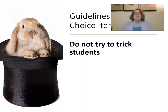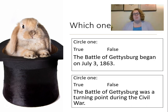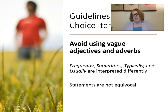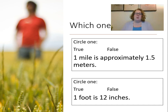Don't try to trick students. This is a key point for all item types — we're not trying to trick students. We can make things difficult without trickery. Small word changes and trivial knowledge really just lower the validity of the scores. For example, 'The Battle of Gettysburg began on July 3rd, 1863' is a trivial fact — the exact date isn't really important; what matters is knowing it was a turning point in the Civil War. Also avoid vague adjectives and adverbs: 'One mile is approximately 1.5 meters' is problematic because 'approximately' can be interpreted differently, whereas 'One foot is 12 inches' is equivocally true. Avoid words like 'usually,' 'approximately,' and 'sometimes.'